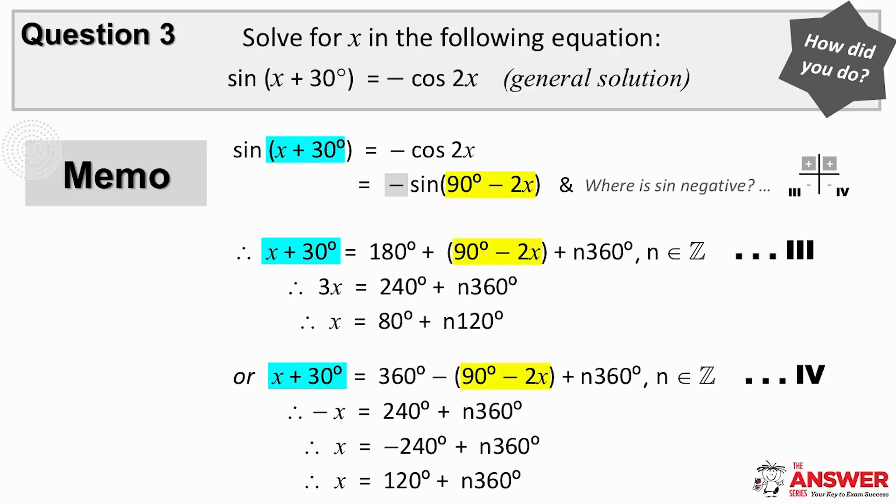So let's have a look at the solution together. Our first step is to use co-ratios to convert, so cos of 2x is just sine of 90 minus 2x. Because the term is negative to start, this will stay negative.